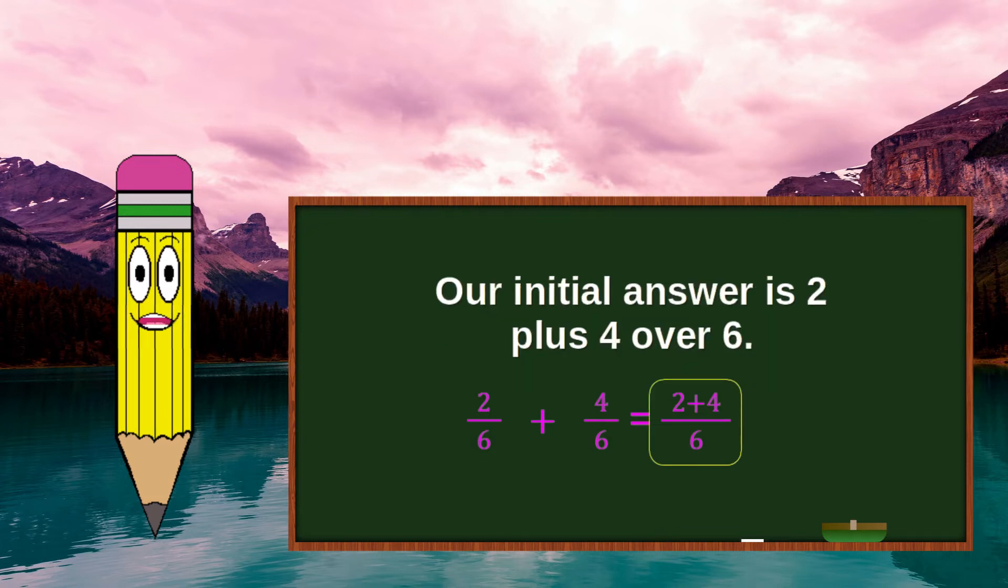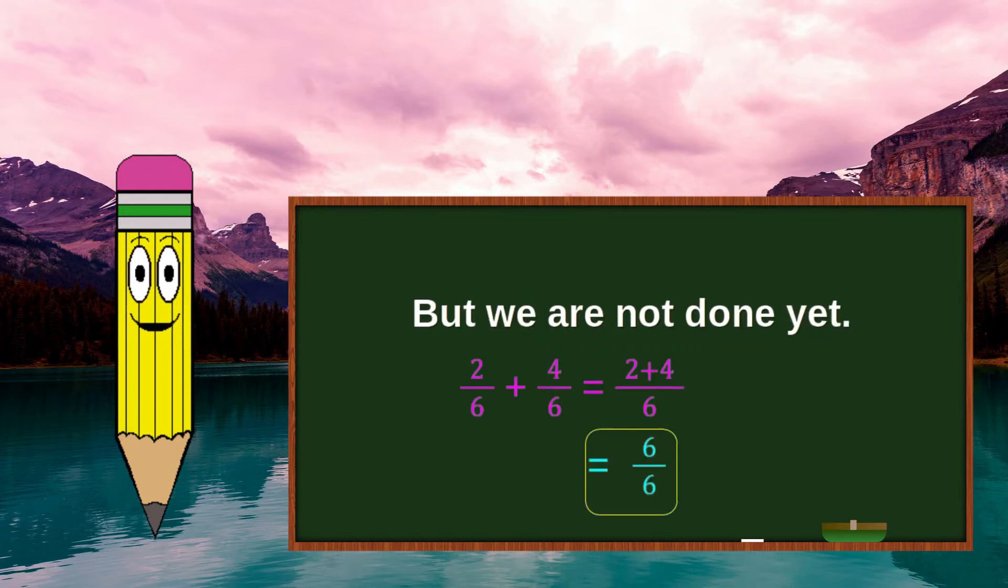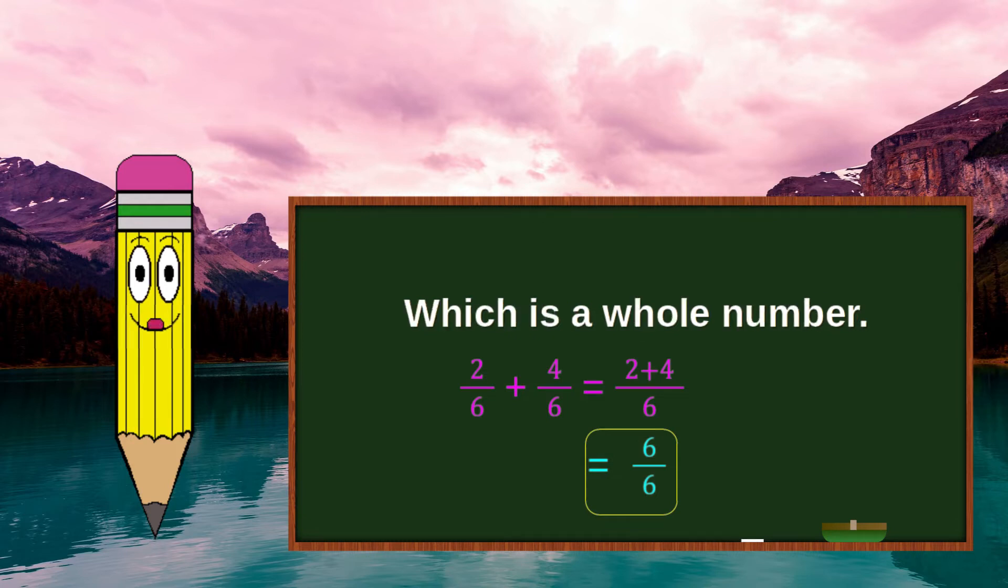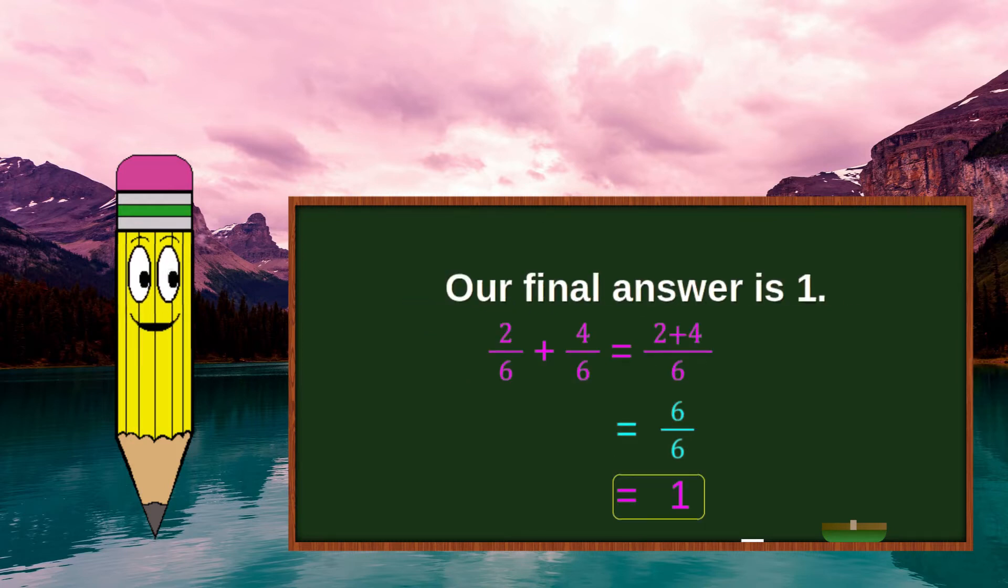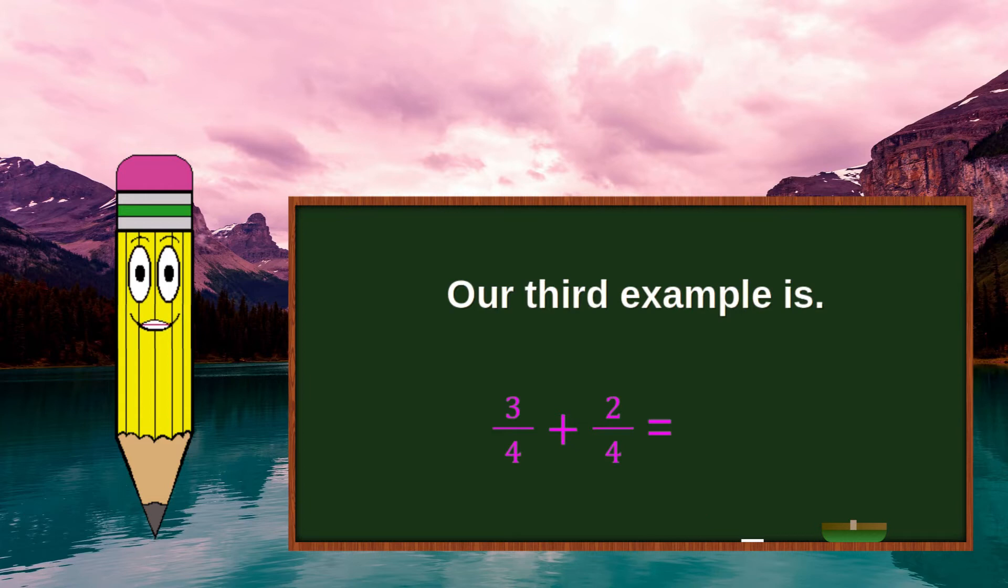Our initial answer is 2 plus 4 over 6, but we are not done yet. Adding, we get 6 over 6, which is a whole number. Our final answer is 1. Our third example is 3 over 4 plus 2 over 4.